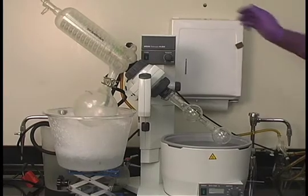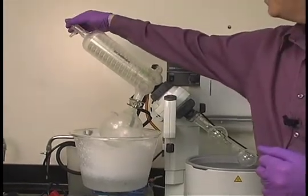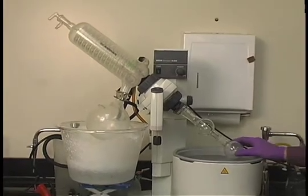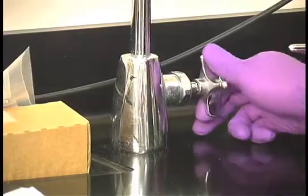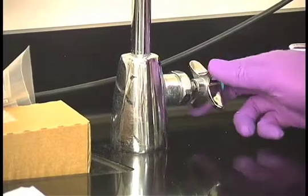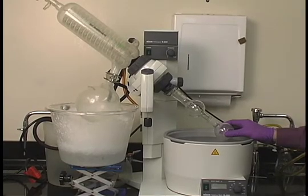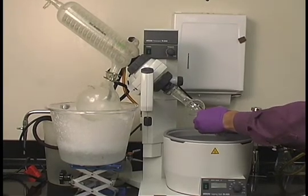Then release the vacuum. Turn off the aspirator. And once it's actually back at room pressure, you can then remove the round bottom flask.